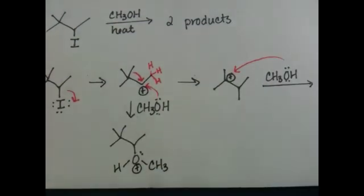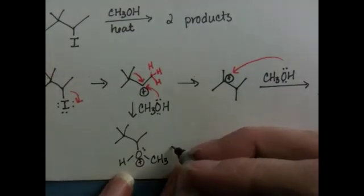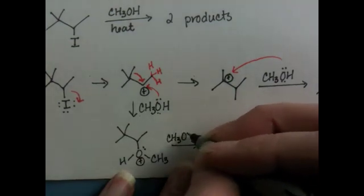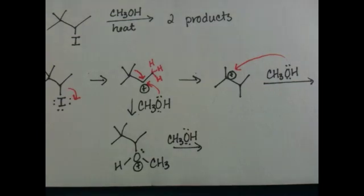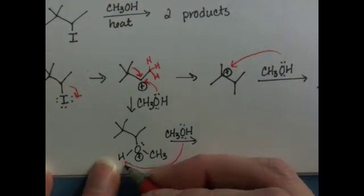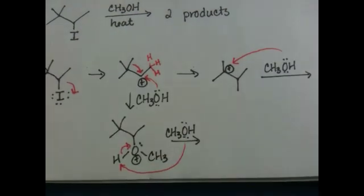So we get the transition state, and then we use another methanol molecule to abstract the hydrogen and convert the transition state to the product.